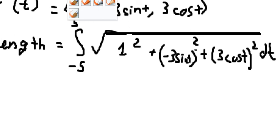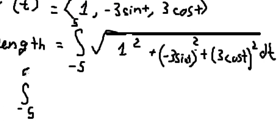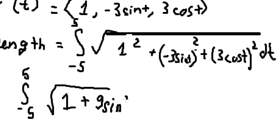Next, this one equals one, and this one equals nine sine t squared plus nine cosine t squared.